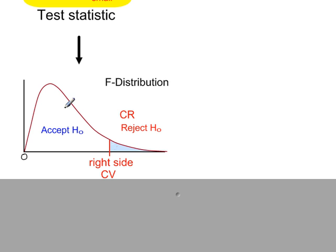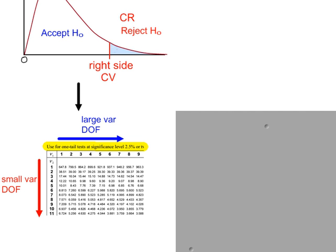This is the F distribution. We always work with the right-hand side of the F distribution, so our critical region is always on the right. We have our right-hand side critical value, which we get from the F distribution tables. In the tables, we need two values for degrees of freedom.